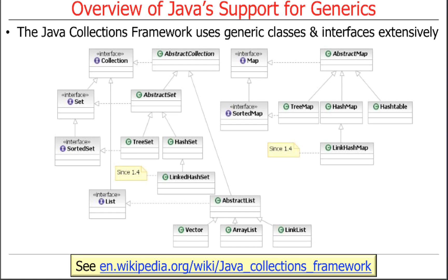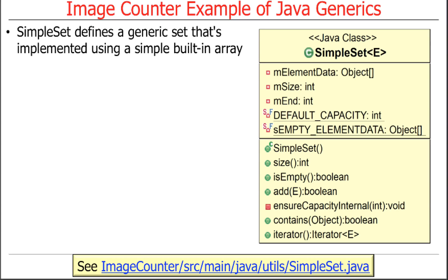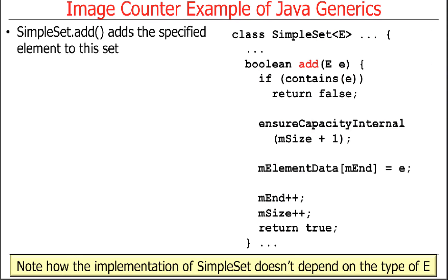The Java collections framework — which you'll become extremely acquainted with in this class because it's the heart of all the stream stuff we'll talk about — uses generic classes and interfaces all over the place. You'll become quite facile with lists, ArrayLists, HashSets, HashMaps, and so on. As a simple example, SimpleSet is a generic set implemented using a built-in array. The add method's implementation does not depend on the type E — you can write all this code and it'll work for any different kind of type.